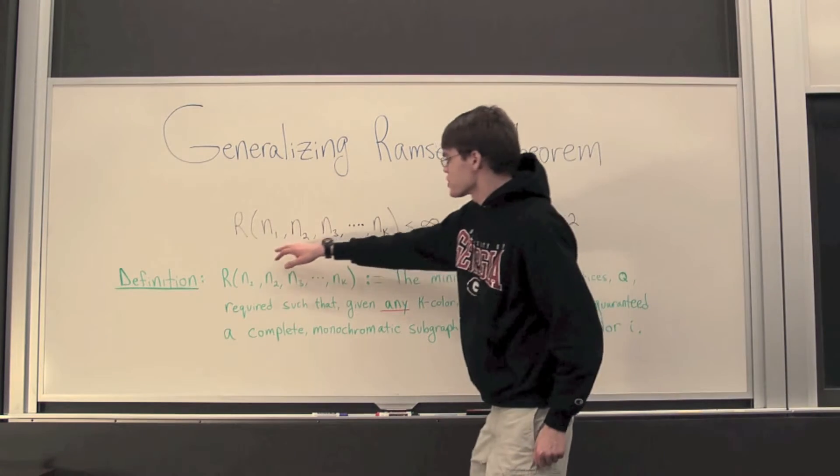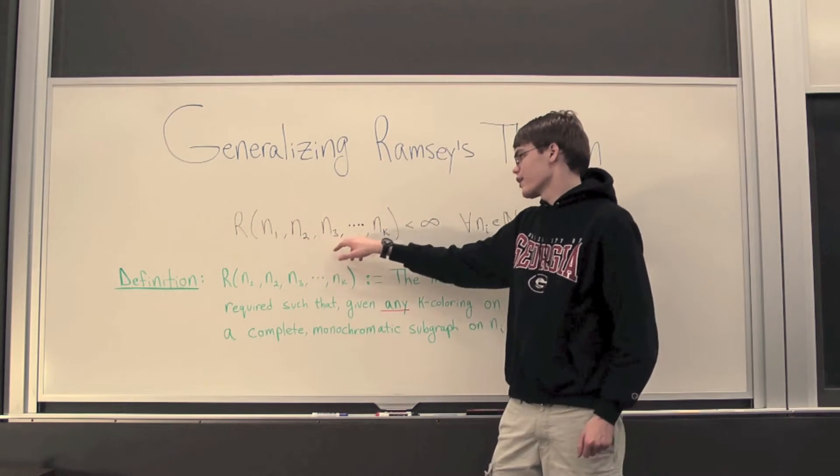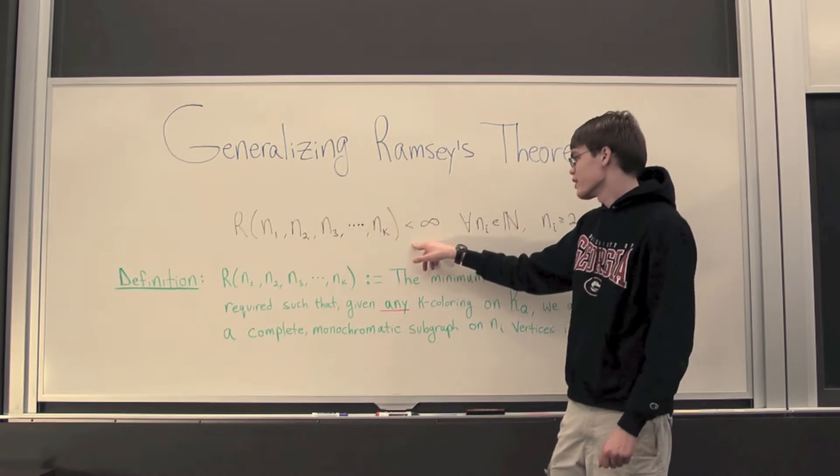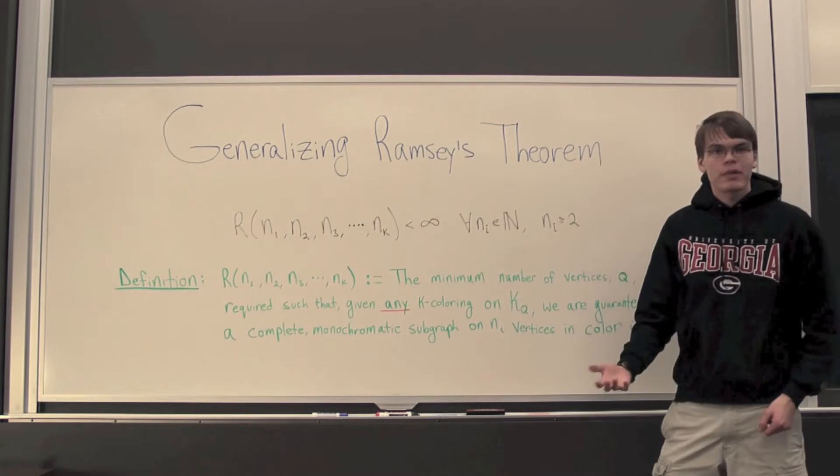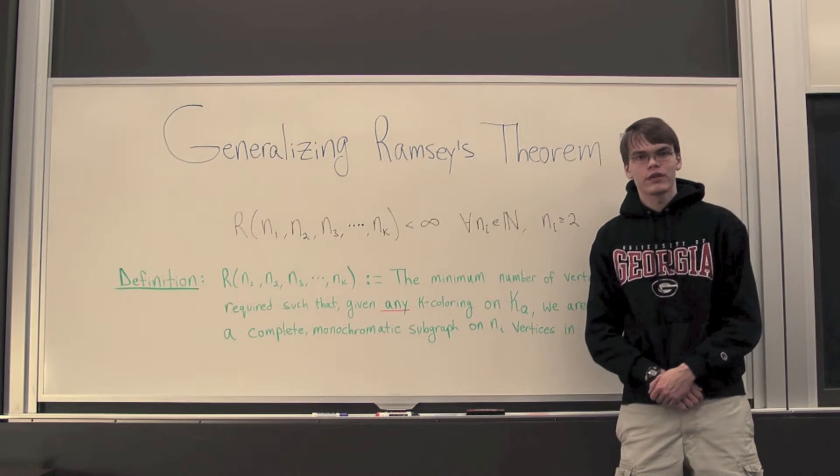Now, the generalization states that r(n₁, n₂, n₃, ..., nₖ) is finite for all n sub i in the natural numbers, n greater than or equal to 2.